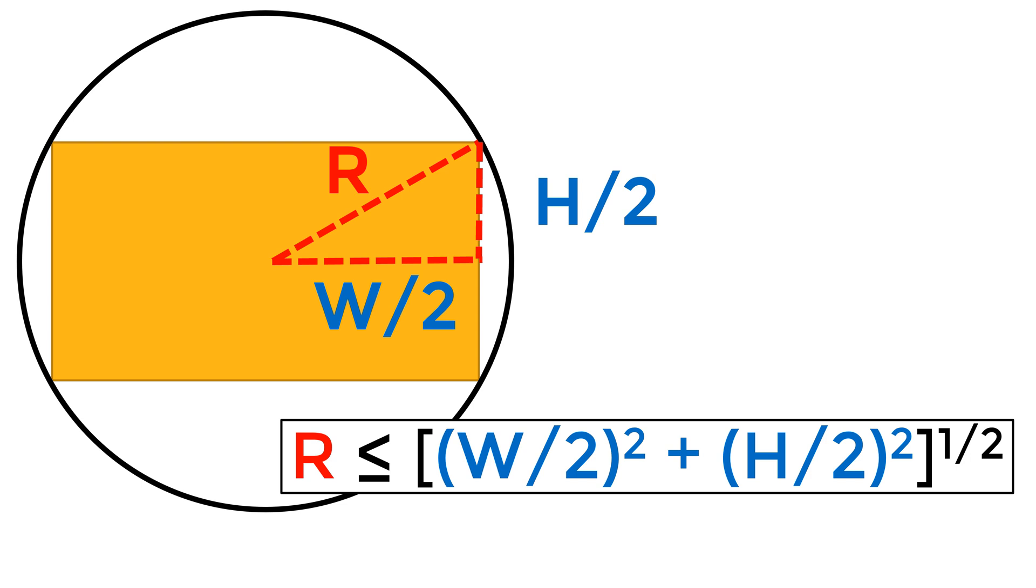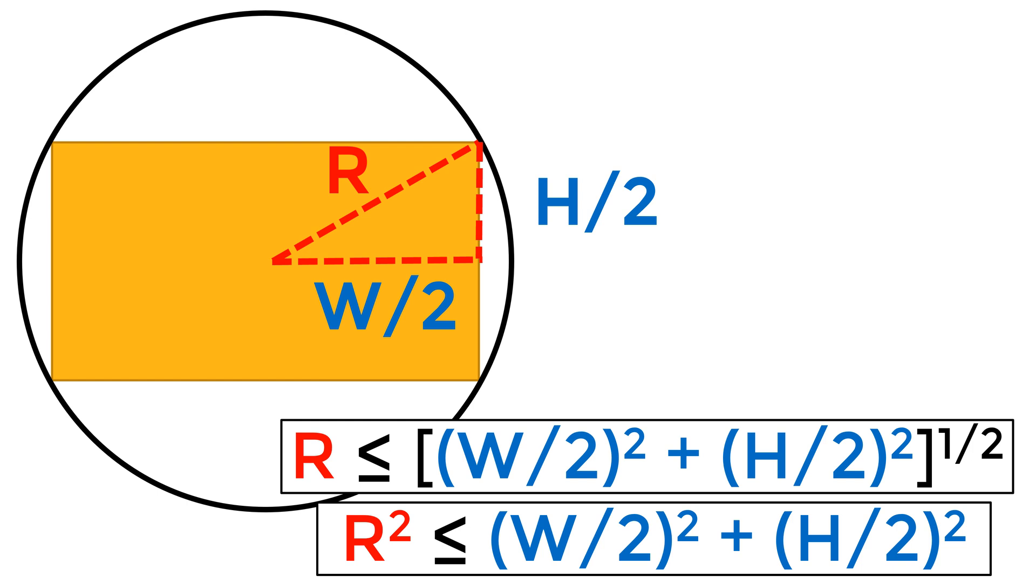Or you can say r squared is less than or equal to w over 2 squared plus h over 2 squared.